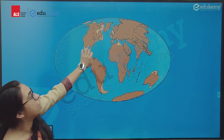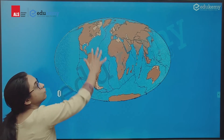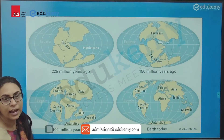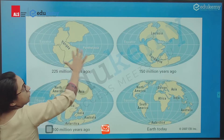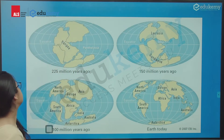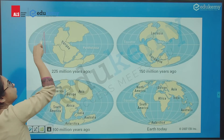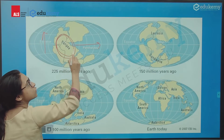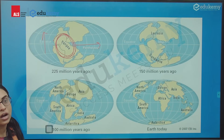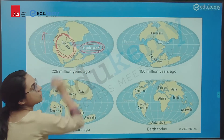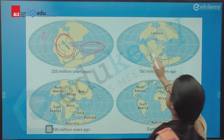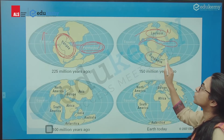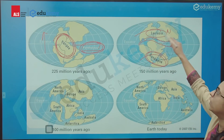All the continents were together in the southern hemisphere, but later the continents broke and moved westward and eastward. This one single continent — all the continents together as one landmass — was known as Pangea, and the huge ocean which surrounded it was the Panthalassa. The continents then split into two parts: the northern part was called Laurasia and the southern part was called Gondwana.